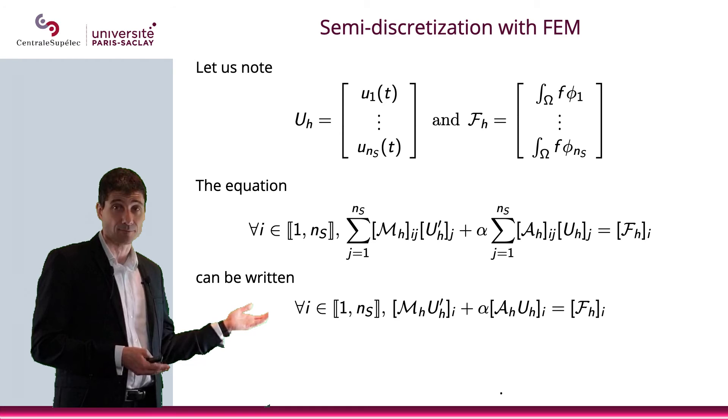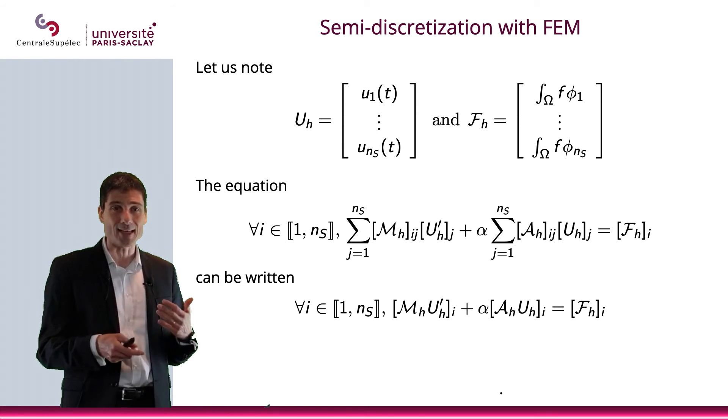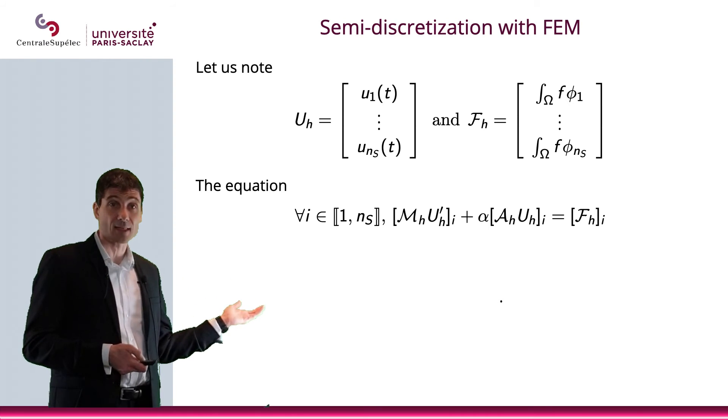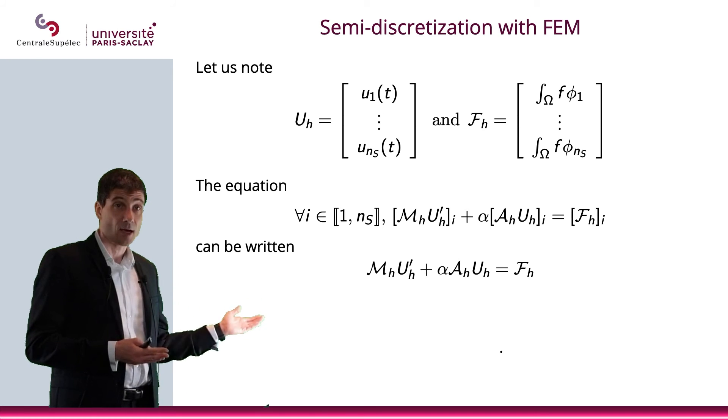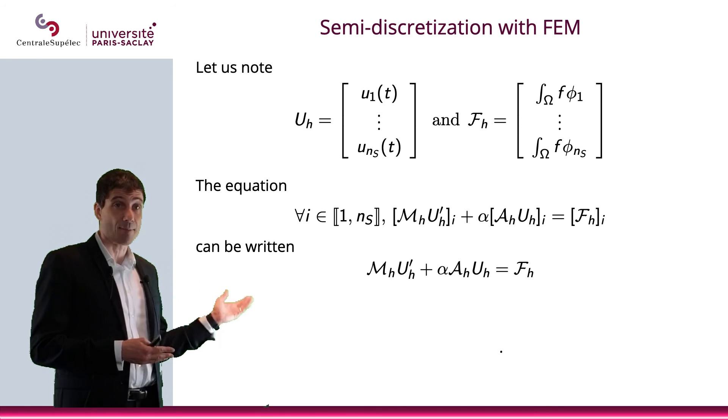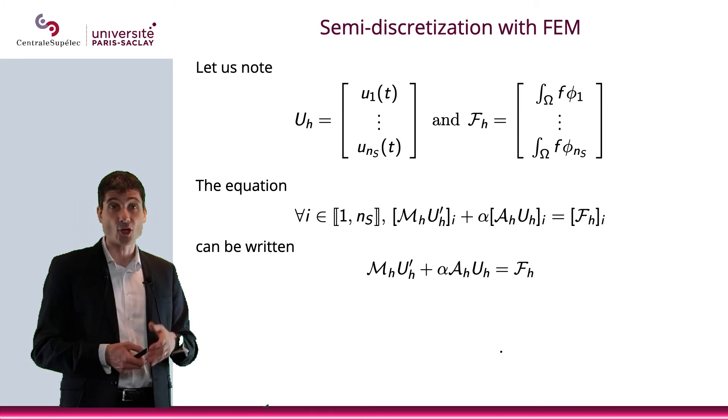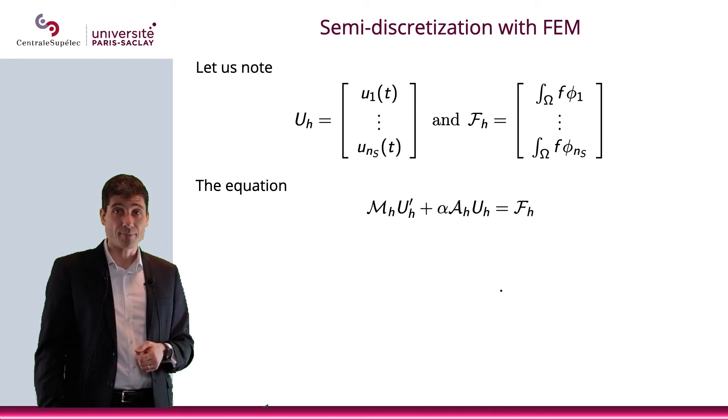And this is true for every single line, in between one and s. So basically what I'm writing is that this can be written in a matrix form. And here is the matrix product, M_h u'_h plus α A_h u_h equals f_h. All right, so this is what I have.